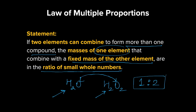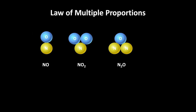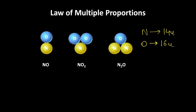Let's verify it with another example. We have nitrogen oxide (NO), nitrogen dioxide (NO₂), and dinitrogen oxide (N₂O). All three compounds are made up of nitrogen and oxygen. Nitrogen has an atomic mass of 14u and oxygen has a mass of 16u. So the mass ratio of nitrogen to oxygen in NO is 14:16, in NO₂ is 14:32, and in N₂O is 28:16.